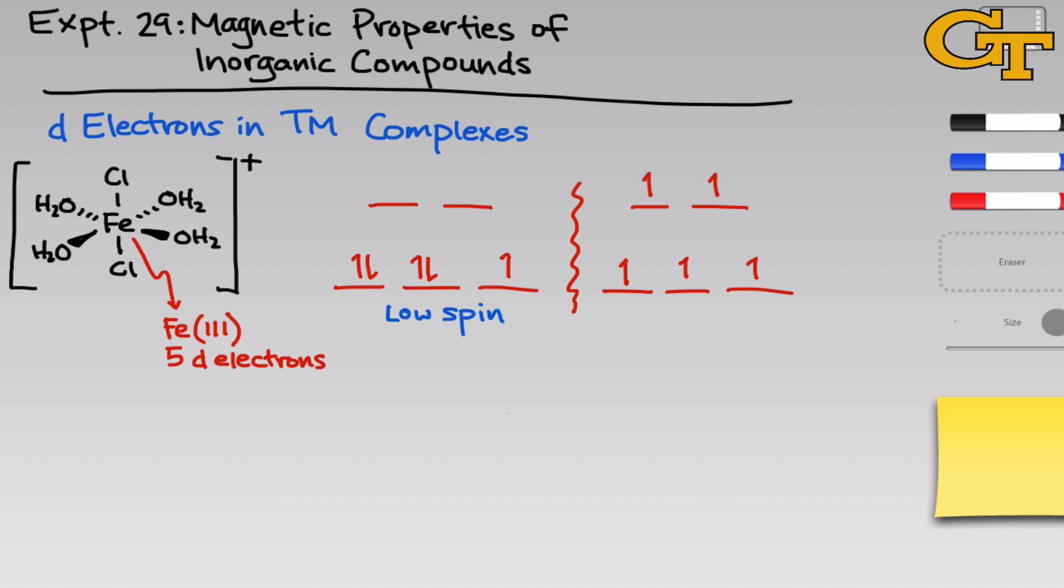We call the situation on the left low spin because the overall spin is relatively low, just plus one half. The other situation is what we call high spin because all of the spins are pointing in the same direction. Here we would have a total spin of plus five halves. The question of how to determine whether a complex is high spin or low spin is an interesting one, and it's not just as simple as measuring the gap delta between the levels.